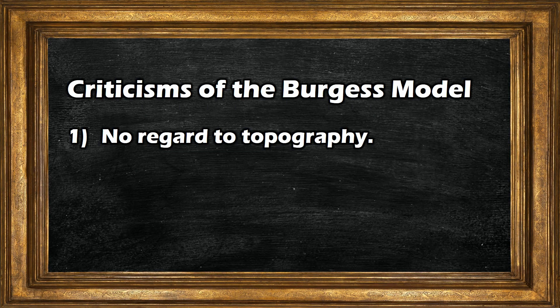It's important to note that like any model, there are going to be limitations and criticisms to this one. First, the model completely ignores topography — that is, the physical characteristics of the land. So Burgess's model won't explain how mountains, rivers, or bodies of water affect the expansion of the city.